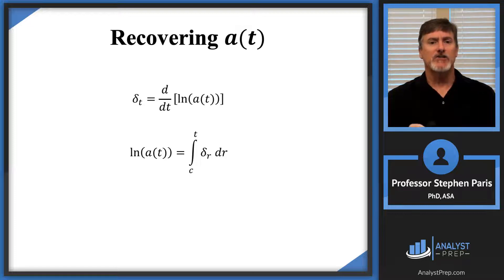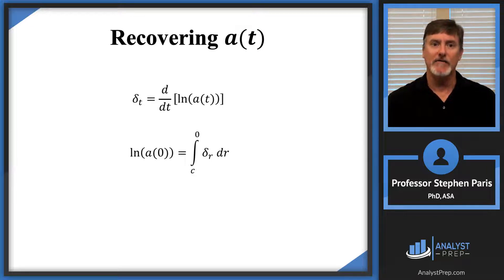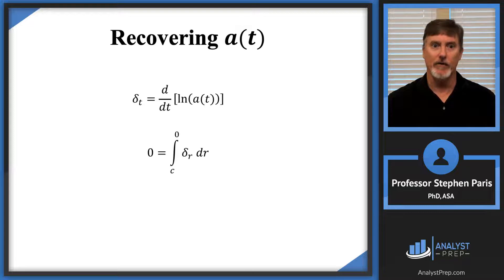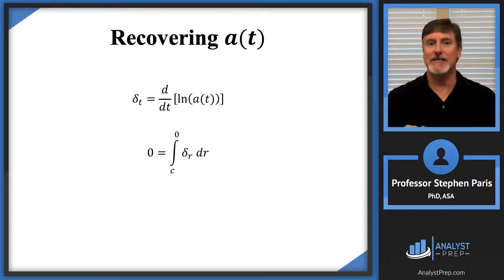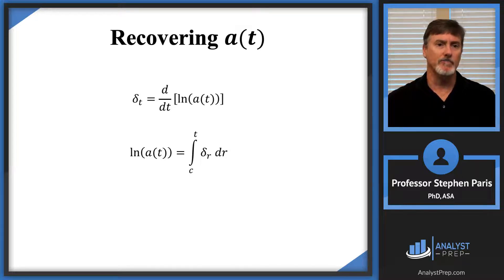Now let's talk about what that c value should be. I'll use what's technically called an initial condition. I'm going to plug in zero for t. In the second equation, where you see t, I put zero in both spots. I know the initial condition: a(0) equals 1. So I'll plug in 1 for a(0). The natural log of 1 is zero. This tells me what the c value has to be. When I integrate the force of interest from c to zero, I need to get zero — so the c value itself has to be zero.